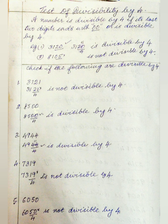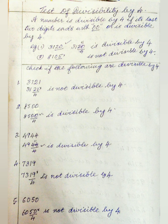Now let us check if the following are divisible by 4. 3121: the last two digits are 21, and 21 is not divisible by 4, so 3121 is not divisible by 4. 8500: the last two digits are 00, so according to the rule it is divisible by 4. 4944: the last two digits are 44, and 4 goes into 44 eleven times, so 4944 is divisible by 4.